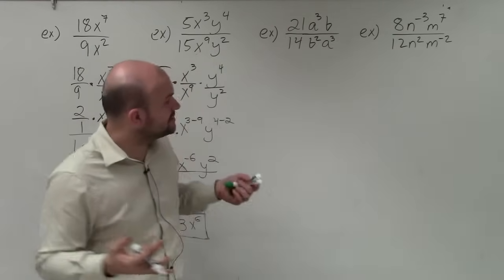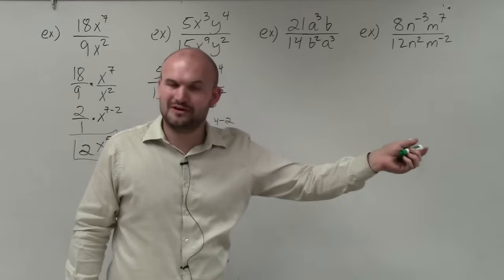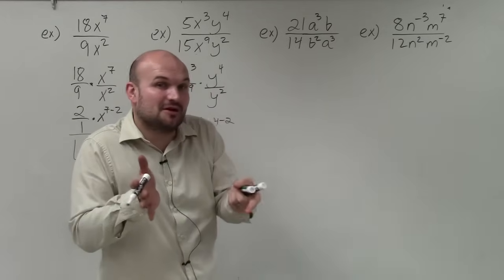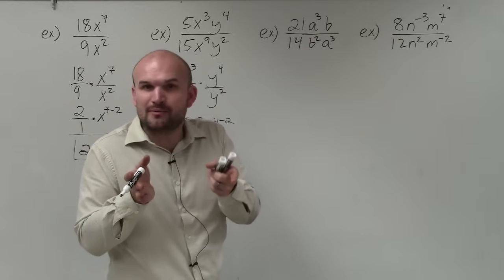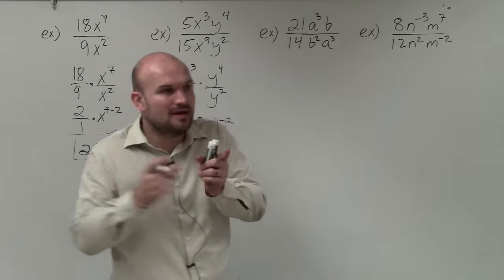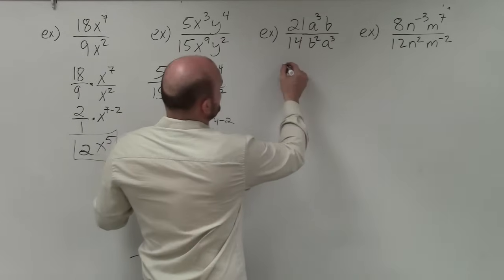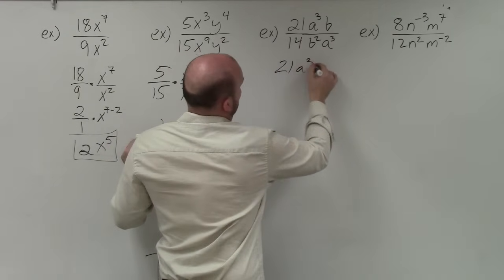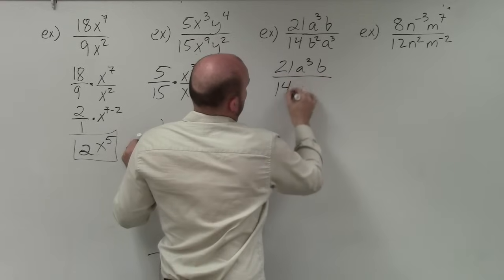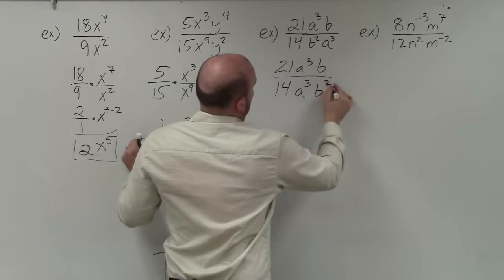Now, in this case, this one gets a little bit trickier because you can see now the a's and the b's are not aligned. Well, fear not, we can just simply align them. Since it's multiplication, we can just rearrange them any way we want to. Just like 2 times 4 is the same as 4 times 2, we can just rearrange b squared times a cubed as a cubed times b squared. So I'm just going to rewrite it. Got to rewrite those, switch them right. OK.